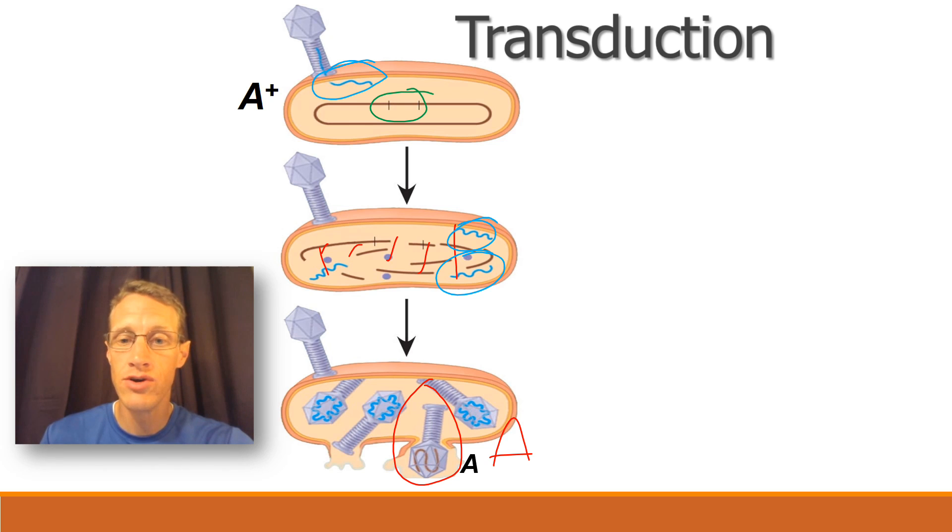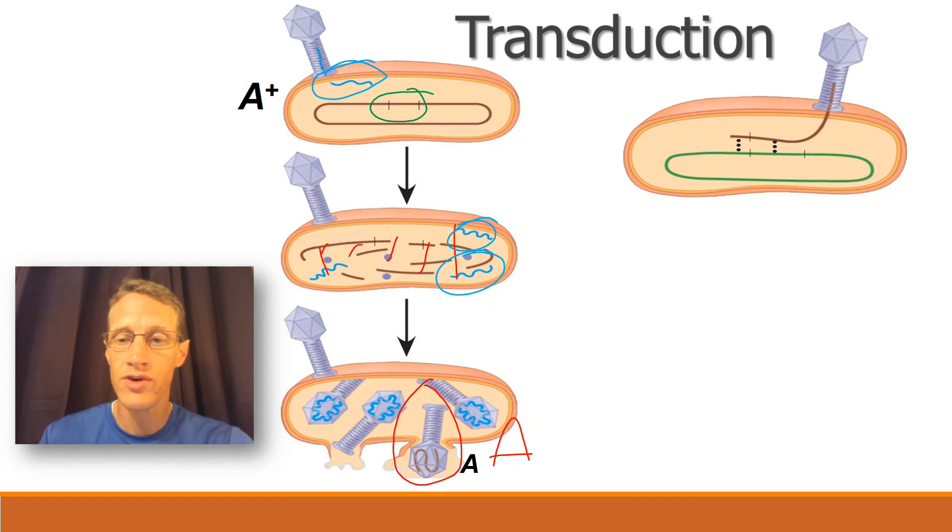Now, when that virus goes to a new host, what it will do is land on that host. And it's programmed to inject whatever nucleic acid is in its head into the host cell. So you see this brown piece coming in here. That is bacterial DNA. Now, the chromosome of this new cell, which might be a different species, can absorb that bacterial DNA.